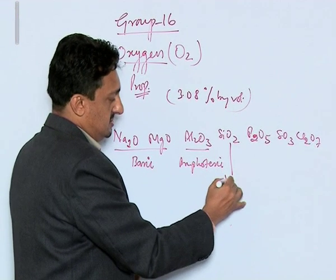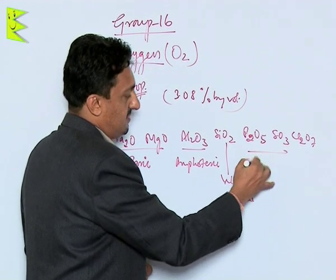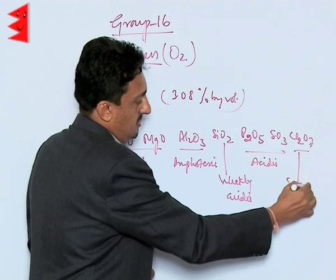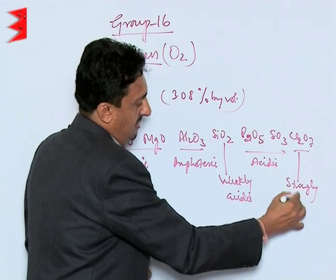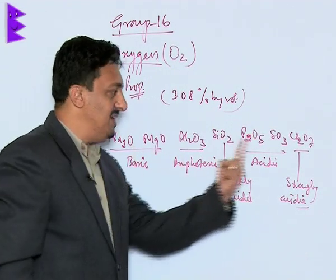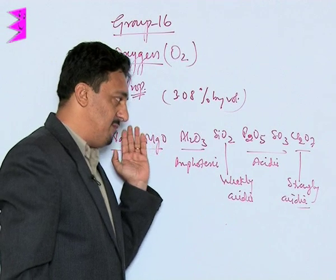These two are acidic, this one is strongly acidic. So this is what we find - across the period, the nature of the oxides increases or changes from basic to acidic.